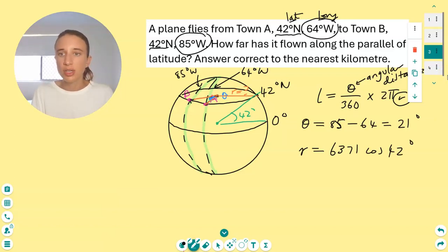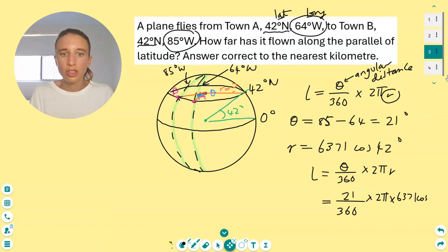So the radius is 6,371 cos 42 from our crazy diagram over the page. And then we can just substitute into our arc length formula above. L equals, I'll just write it again so you can see it substituted in. Theta is 21, the angular distance, the angular difference. 2π times 6,371 cos 42. Looks like a crazy formula.